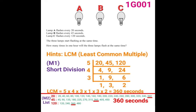The second method is listing. List the multiples of the three numbers one by one. For 20, the multiples are 20, 40, 60, 80, 100, and so on up to around 400. For 45, list 45, 90, 135, 180, and so on up to around 400.